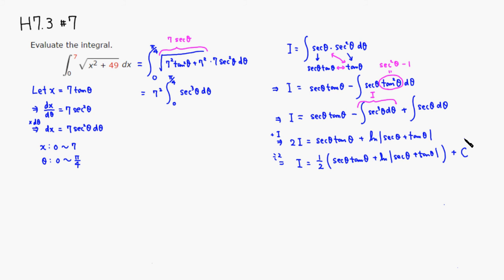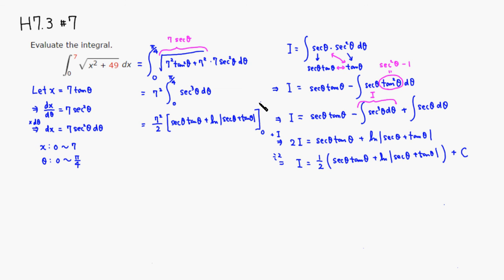Now we plug this anti-derivative of secant cubed back into our integral. We have 7 squared over 2 times [secant(θ)tan(θ) + ln|sec(θ) + tan(θ)|], evaluated from 0 to π/4.